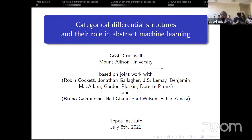Welcome everyone to the Topos Colloquium. Today we have Jeff Crotwell talking about categorical differential structures and their role in abstract machine learning.